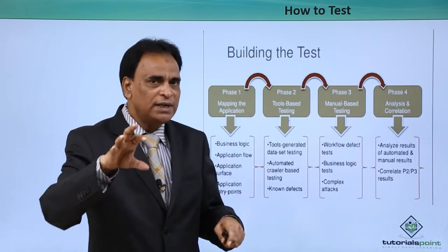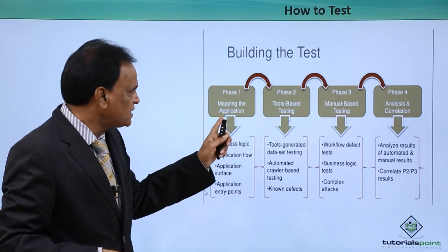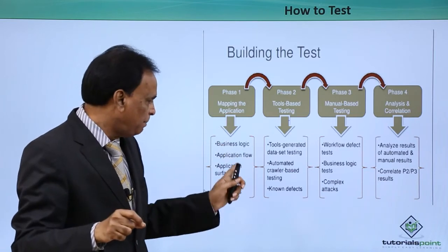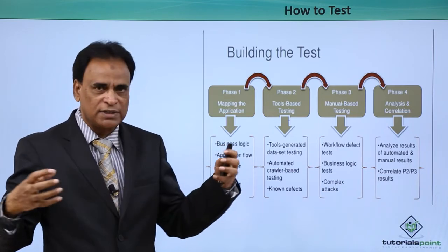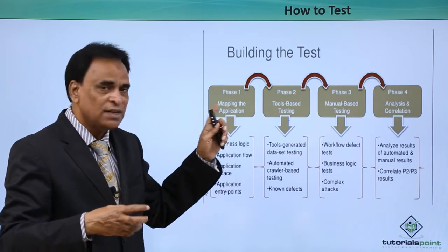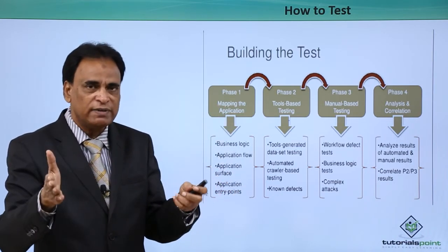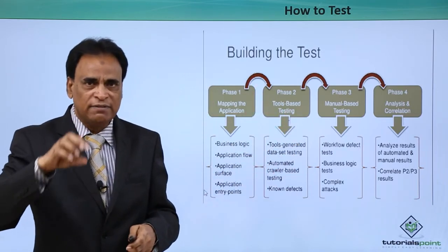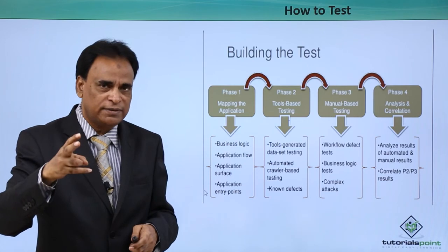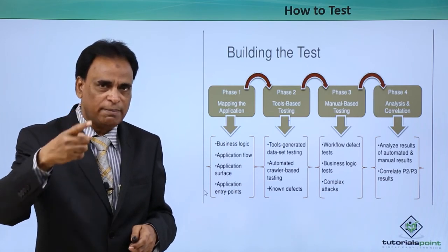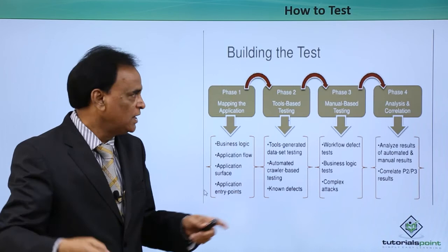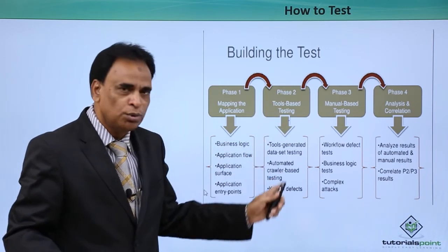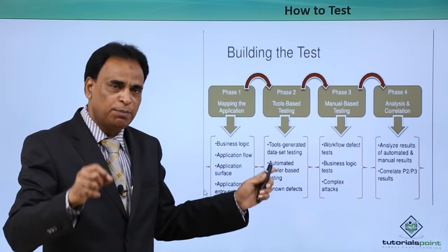How can you actually build a test? The first phase is mapping the application — covering the business logic which is the functionality part, application flow, application surface, and application entry points. This is the first phase where you map the requirements along with the application to be built. The second phase is tools-based testing. As discussed, there are two types of testing: manual testing and automation testing. In this phase you do tools-based testing and reports are generated.